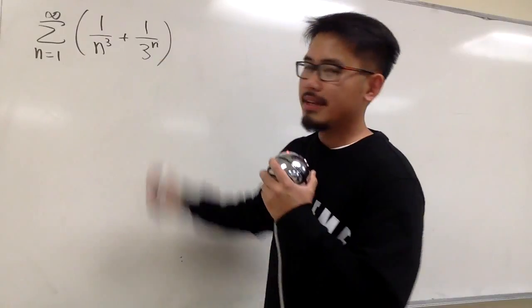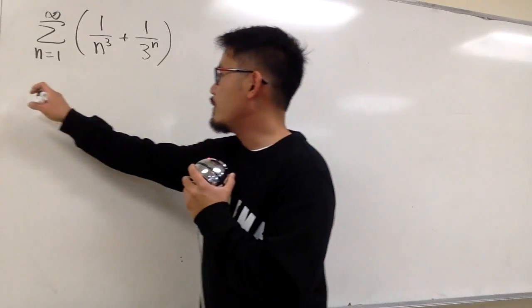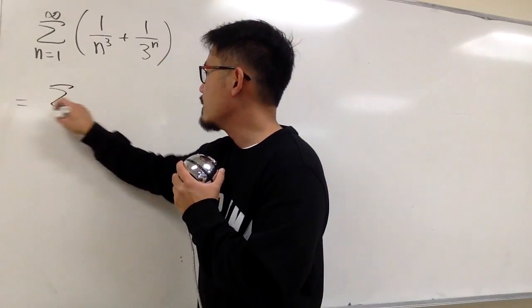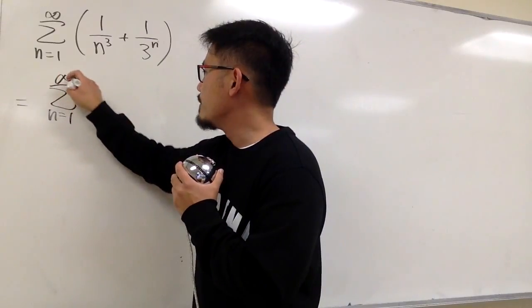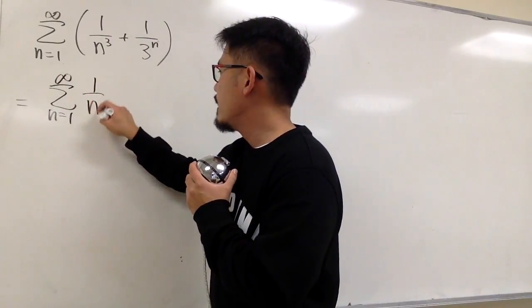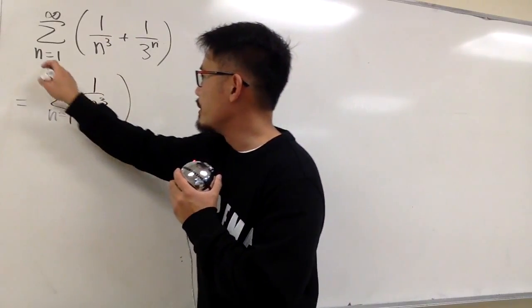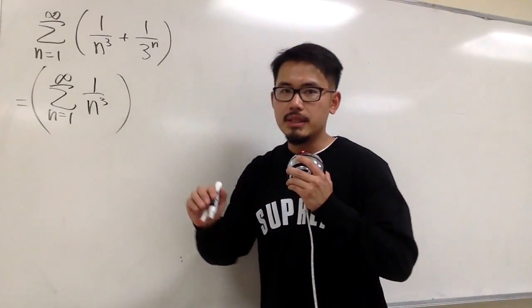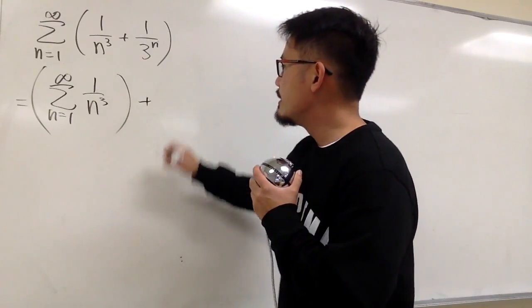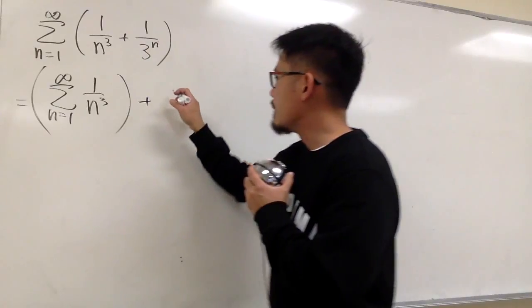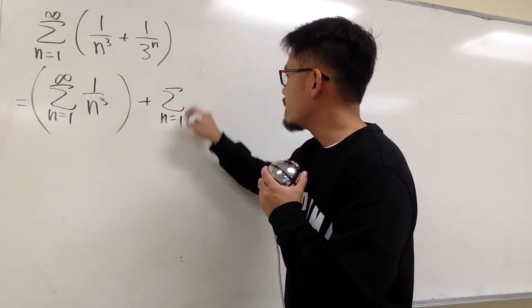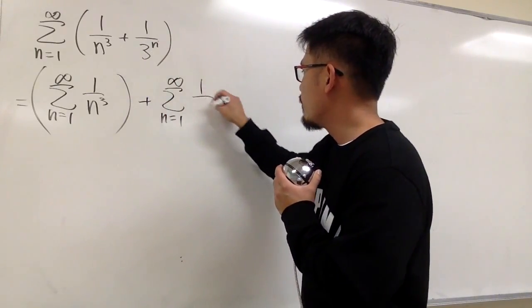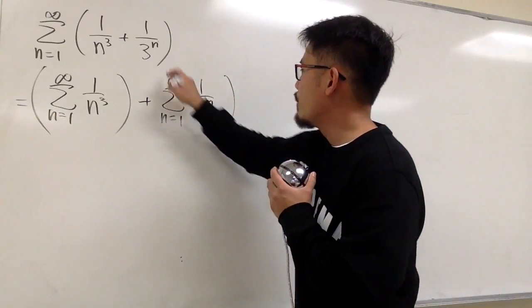This is what we can do. We can look at this as two separate series. The first one is σ when n goes from 1 to infinity, 1 over n to the 3rd power, we'll focus on this first. And then we add it with the second series, which is σ when n goes from 1 to infinity, 1 over 3 to the nth power.